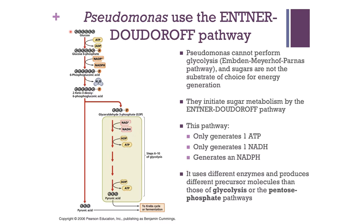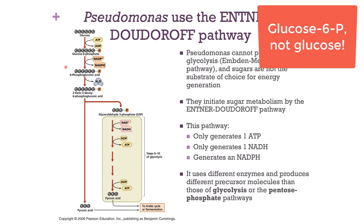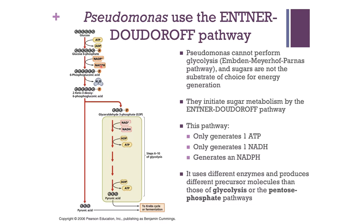In the Entner-Doudoroff pathway, glucose is phosphorylated to glucose-6-phosphate just like in glycolysis, but that's where the similarities stop. Glucose is oxidized to 6-phosphogluconic acid, reducing NADP+ to NADPH. That 6-phosphogluconic acid undergoes a dehydration reaction to become 2-keto-3-deoxy-6-phosphogluconic acid. When this 6-carbon molecule is split, you immediately produce one pyruvate and one glyceraldehyde-3-phosphate. That glyceraldehyde-3-phosphate then goes through steps 6 through 10 of glycolysis to produce another pyruvate, generating 1 NADH and 2 ATP in the process.